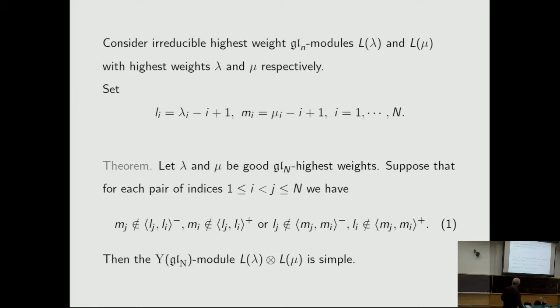Audience question about loops: What is a loop? Response: If we have some arrows in the graph — something like this — this is a loop. We start from a vertex, we follow the arrows, and we come back to the same vertex. That is a loop.